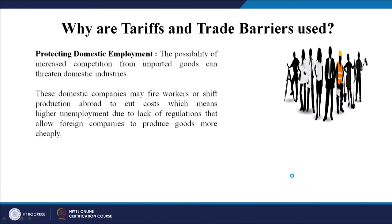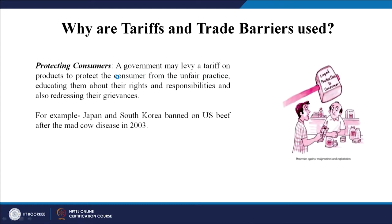Why are trade and tariff barriers used? First, they help in protecting domestic employment — the possibility of increased competition from imported goods can threaten domestic industries, so the government creates regulations to save domestic employment. Second, protecting consumers — a government may levy a tariff to protect consumers from unfair practices. For example, Japan and South Korea banned US beef after the mad cow disease in 2003 to protect their consumers.